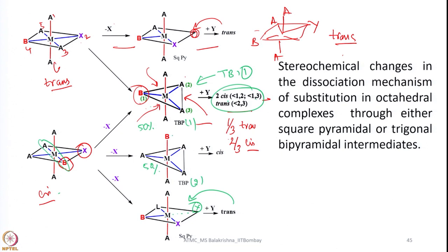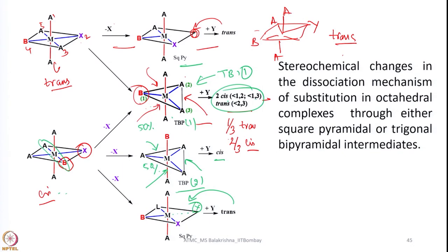In TBP2 case, with three possible attack positions, no matter from which direction Y comes, we get only cis. You should be able to calculate the total ratio of isomers and the ratio of cis to trans. Take 100 percent of the starting molecule and calculate what percentage of cis and what percentage of trans is obtained — when starting with a cis octahedral complex, and also a trans octahedral compound, involving both square pyramidal and trigonal bipyramidal geometries. For the cis case, two TBP geometries are involved along with square pyramid; for the trans case, only one TBP isomer and one square pyramid are involved.